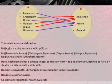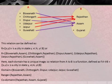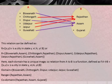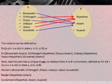Let's take an example of a function. Here, set A denotes Biswanath, Chittagad, Dispur, Udaipur, Jaipur, and Guwahati, while set B denotes Rajasthan, Assam, and Gujarat. We can define a relation from set A to set B such that X is a city in state Y, where X belongs to A and Y belongs to B. Or, R equals: Biswanath Assam, Chittagad Rajasthan, Dispur Assam, Udaipur Rajasthan, Jaipur Rajasthan, and Guwahati Assam. Here, each domain has a unique image, so this relation is a function.